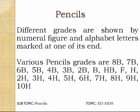Different grades are designated by numeral figures and alphabet letters marked at one end of the pencil. Various pencil grades available are 8B, 7B, 6B, 5B, 4B, 3B, 2B, B, and HB — this is the decreasing order of grade in the B (black) series. When the number is larger, the pencil is softer. B means the pencil is black and the number indicates the grade.